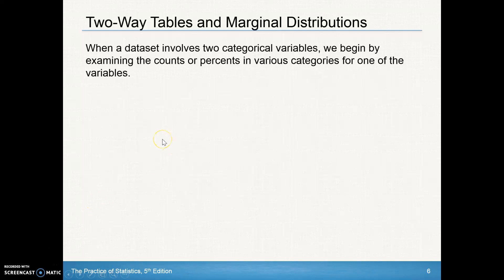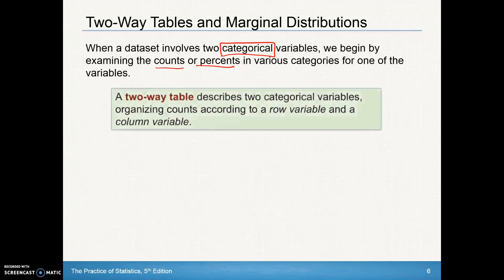When a data set involves two categorical variables, we begin by examining the counts or percents in various categories for one of the variables. A two-way table describes two categorical variables, organizing counts according to a row variable and a column variable. Rows go this way, columns go this way.